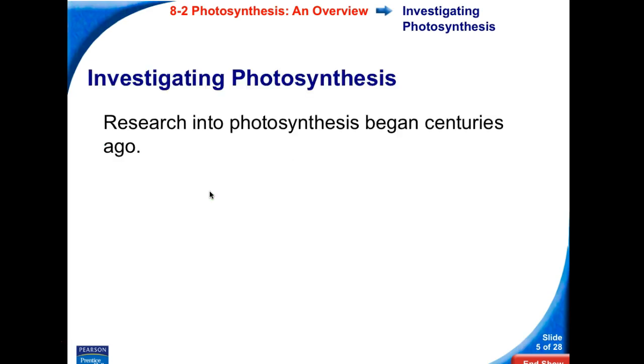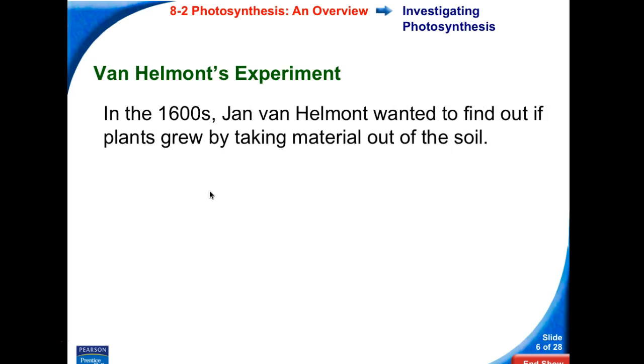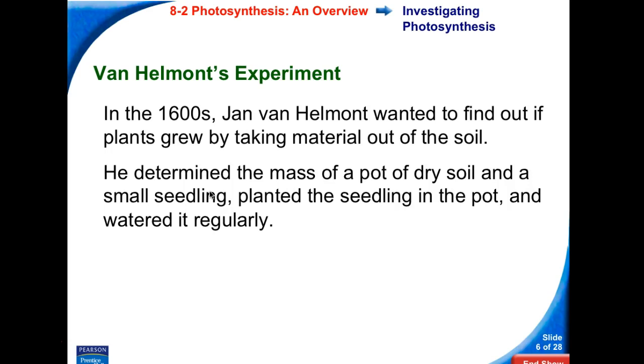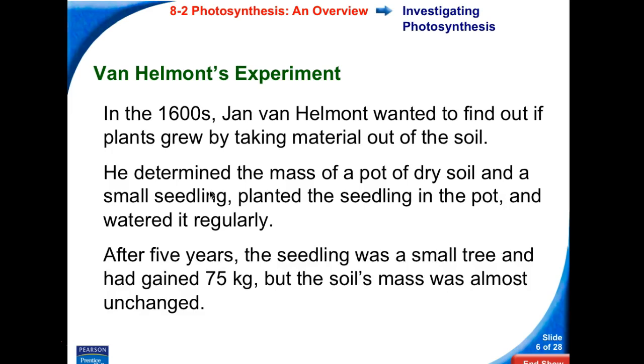In investigating photosynthesis, research began centuries ago. In the 1600s, Jan van Helmont wanted to find out if plants grew by taking material out of the soil. He determined the mass of a pot of dry soil and a small seedling, planted the seedling in the pot and watered it regularly. After about five years, the seedling was a small tree and gained 75 kilograms of mass, but the soil's mass was almost unchanged.